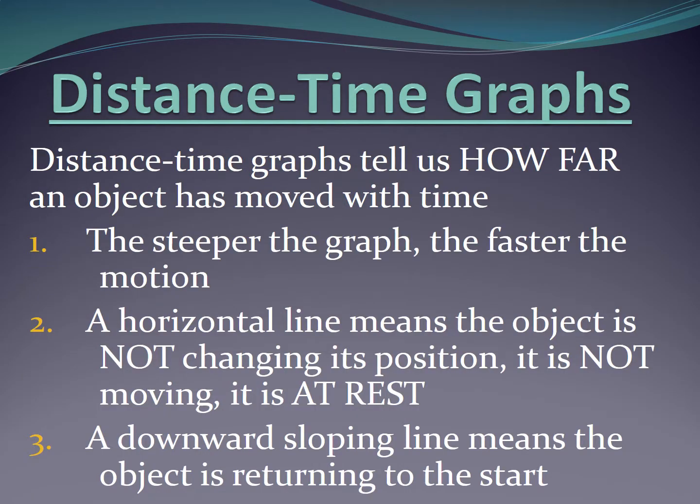The main points here is that distance-time graphs tell you how far that object moved within that certain time limit. The steeper the graph, the faster the motion, because even though they're going the same distance, that steeper graph is doing that distance in less time, meaning it's faster. A horizontal line means it's not changing position. That makes sense.